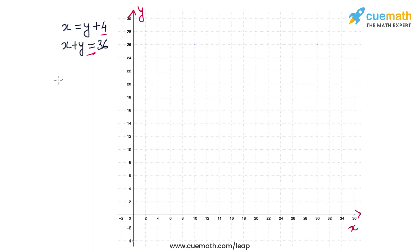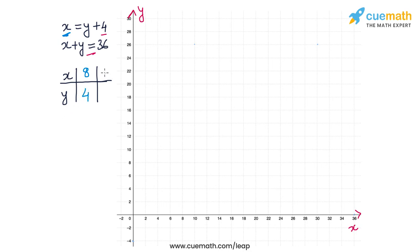Let's first graph the equation x = y + 4. Using an x-y table, let's pick two easy-to-plot values. If x = 8, then y = x − 4 = 4. If x = 16, then y = 12. So (8, 4) and (16, 12) are two solutions of the first equation.